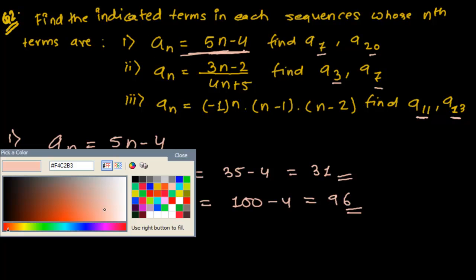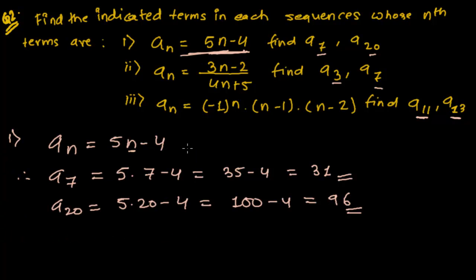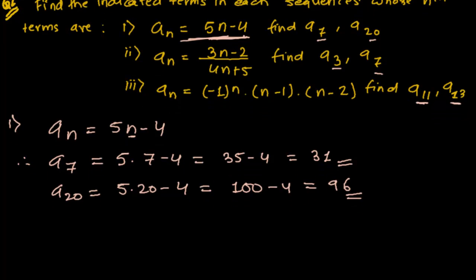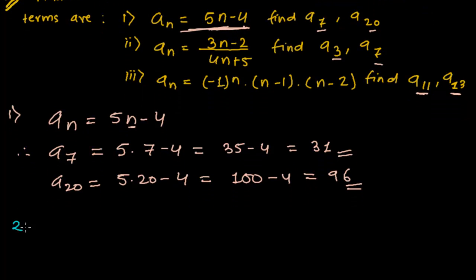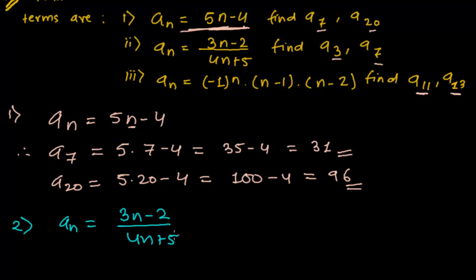Now we have to find another problem. That is: an = (3n-2) divided by (4n+5). Find a3 and a7. The nth term is given as (3n-2)/(4n+5).